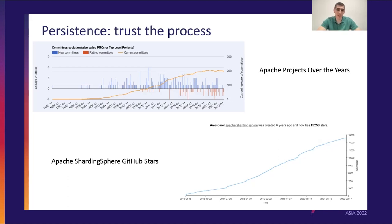On the other hand — not to boast — the Apache ShardingSphere community tries to continuously adapt, which is definitely something I would recommend. As you can see from our GitHub Stars graph, we are on the way up, and I hope that we will continue going in this positive and growing direction for the future.